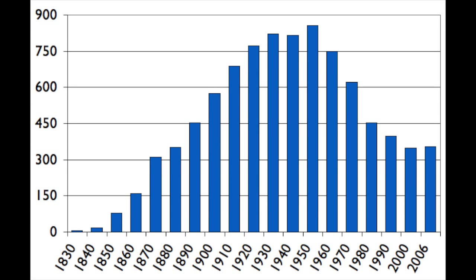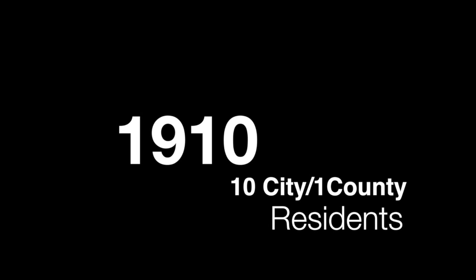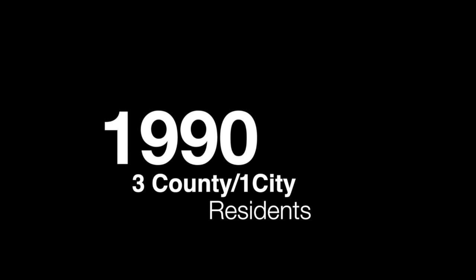The total population of the city of St. Louis peaked at 850,000 in 1950. With whites moving into the county, the city's population dropped to 350,000 by the late 1990s. When the 20th century began, there were more than 10 city residents for every county resident. Towards its end, there were about three county residents for every city dweller.